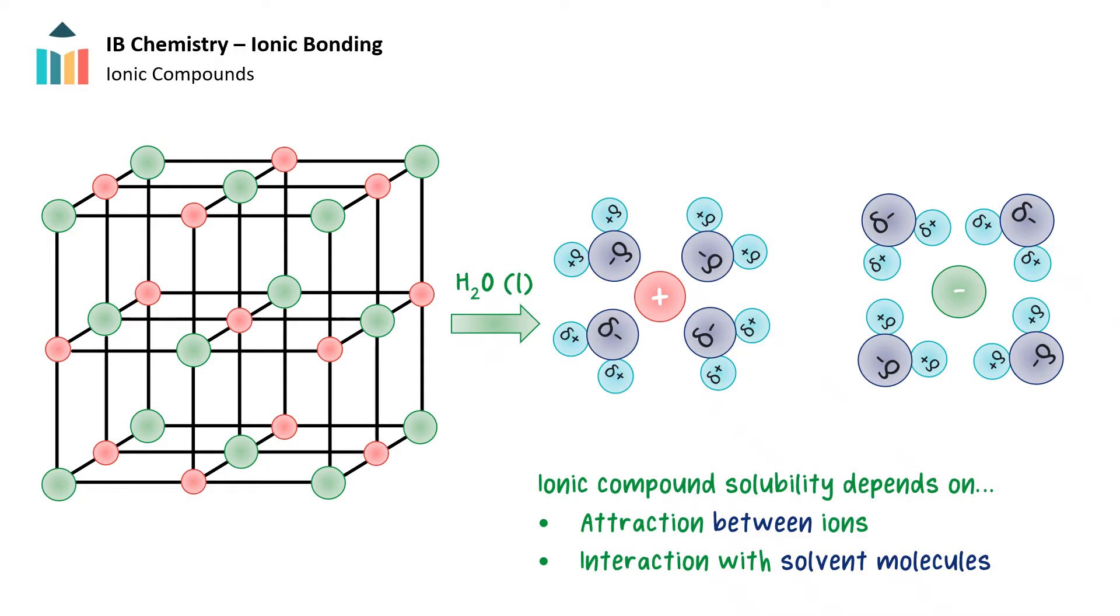So we just looked at how ionic compounds look and some of their properties. Next, we'll look into how to come up with the chemical formulas for ionic compounds. For example, how do we know that sodium chloride is NaCl and not, say, Na2Cl?